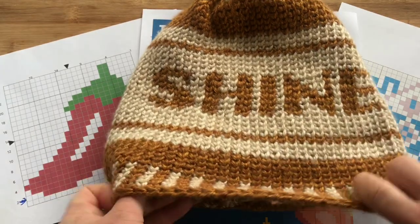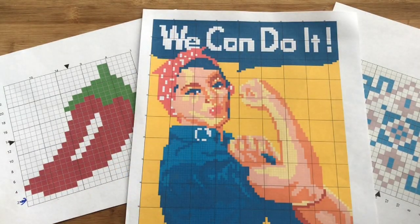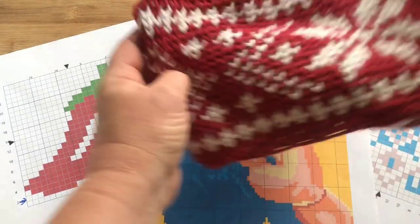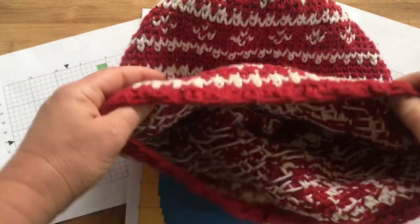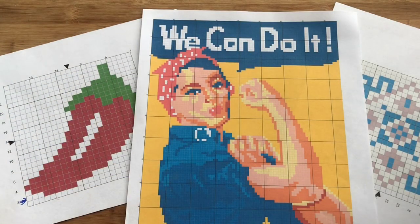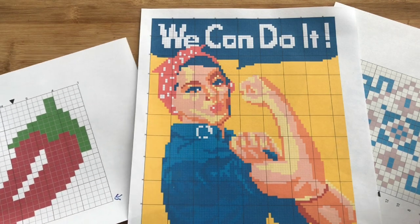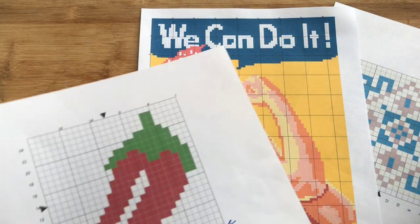You can also do Fair Isle style hats like the one I did here. You can see that's floated yarn in the Fair Isle. So let's get down to the basics of how to read a graph.